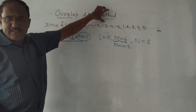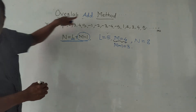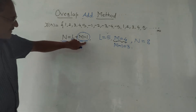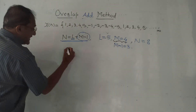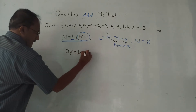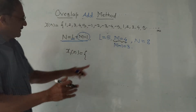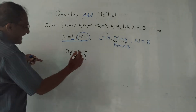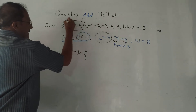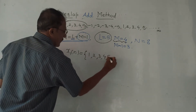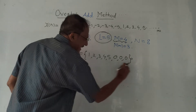The next method is the overlap add method, which is slightly different from the overlap save method. We consider the same sequence X(n) with the same values. Again N = L + M - 1, with L = 5 and M = 4, so N = 8. In this method, forming blocks is straightforward: take L = 5 samples from X(n) — the first 5 samples: 1, 2, 3, 4, 5 — and add 3 zeros at the end to make the block length equal to 8.